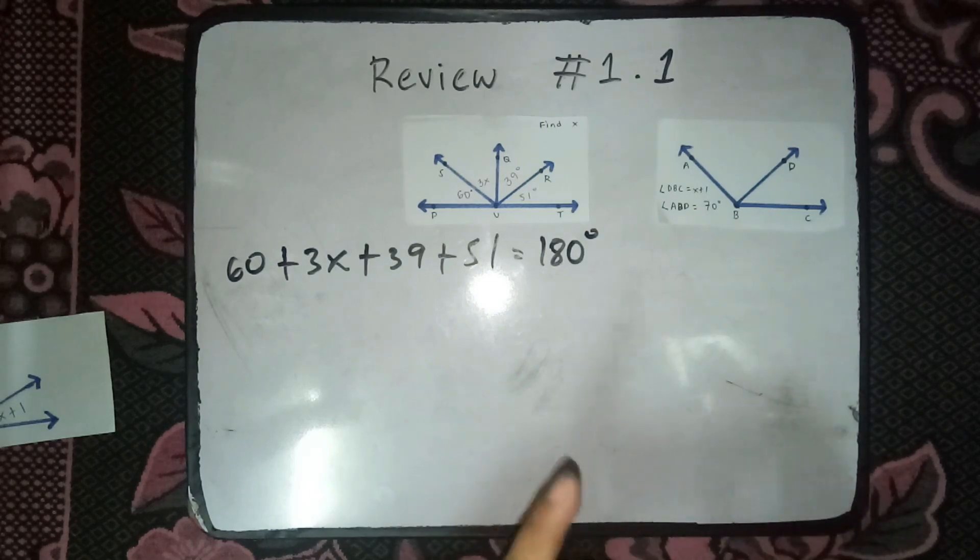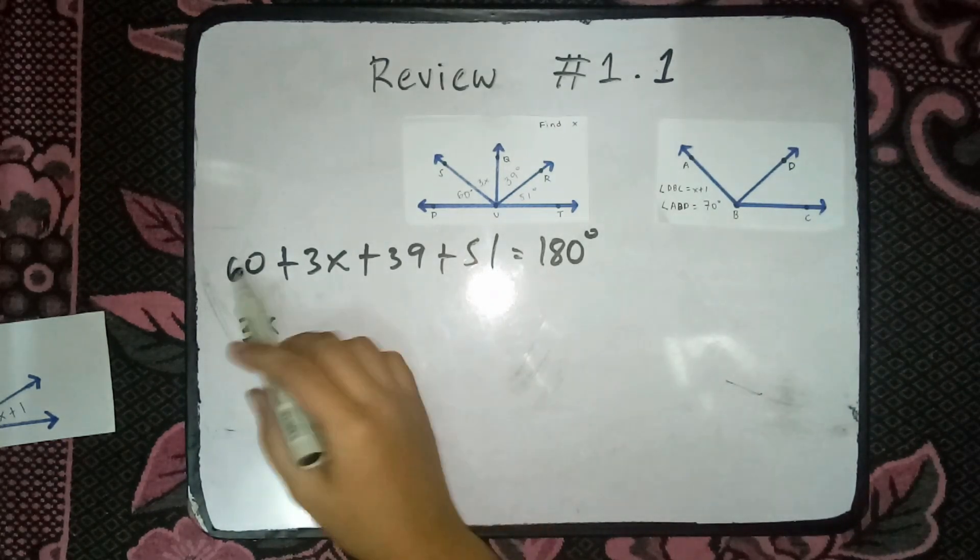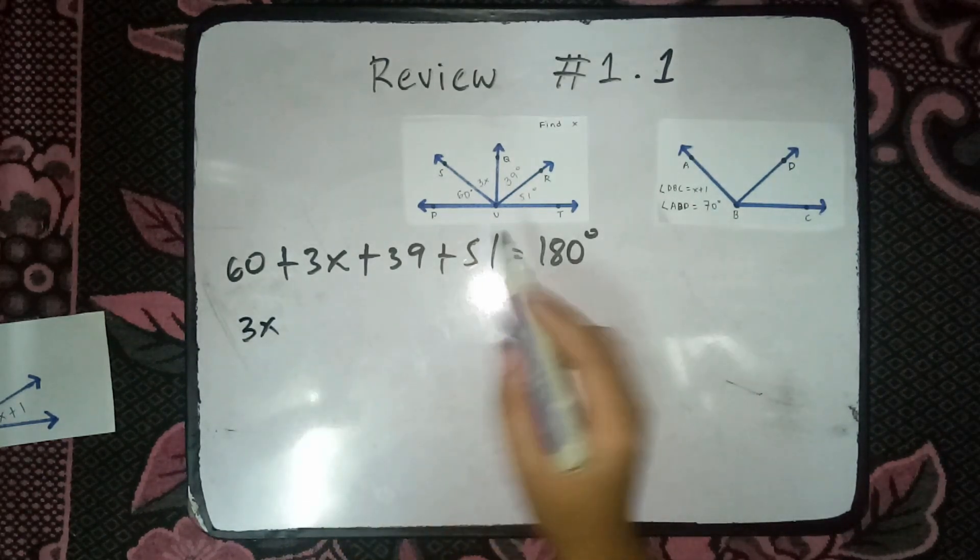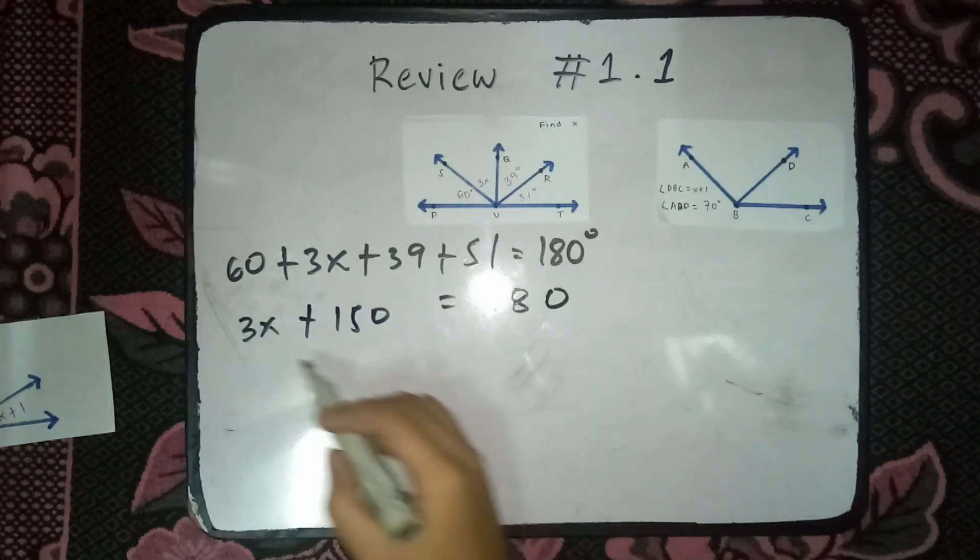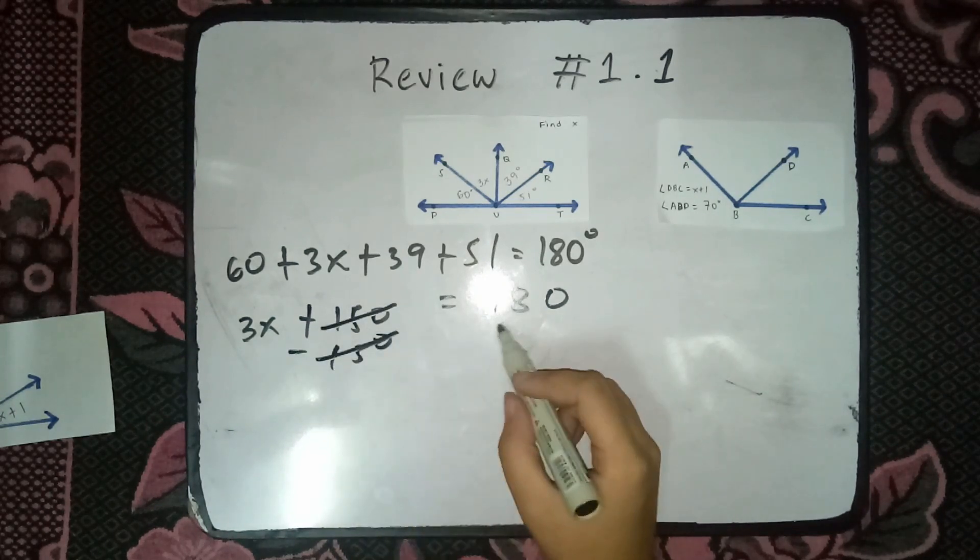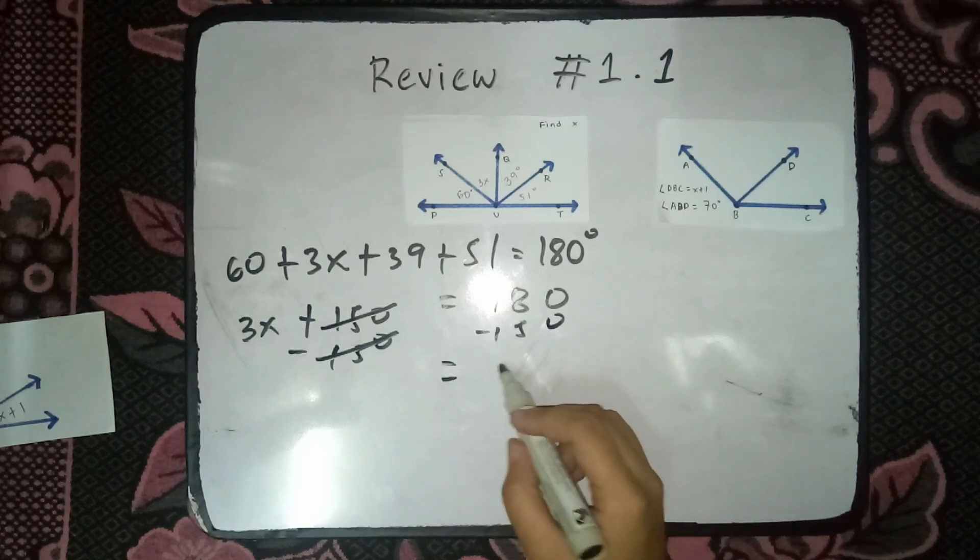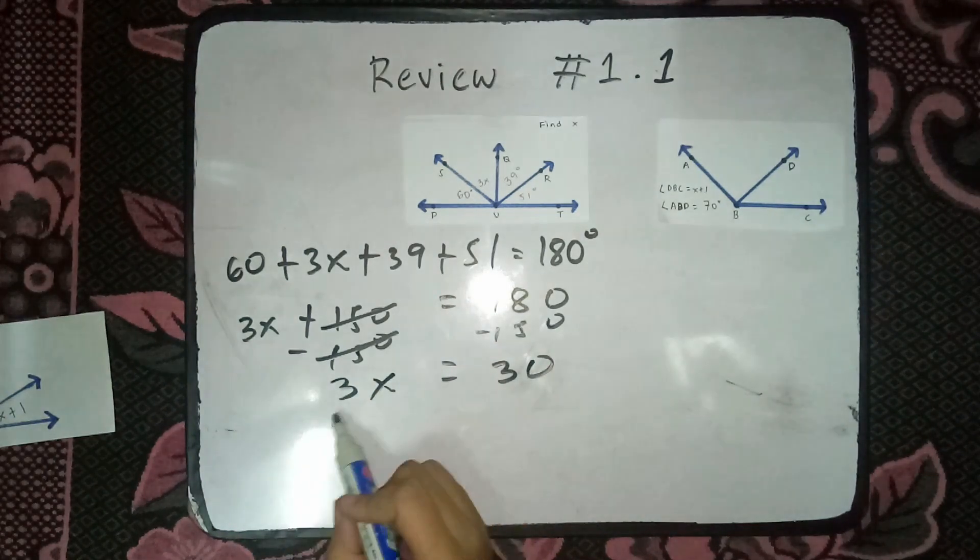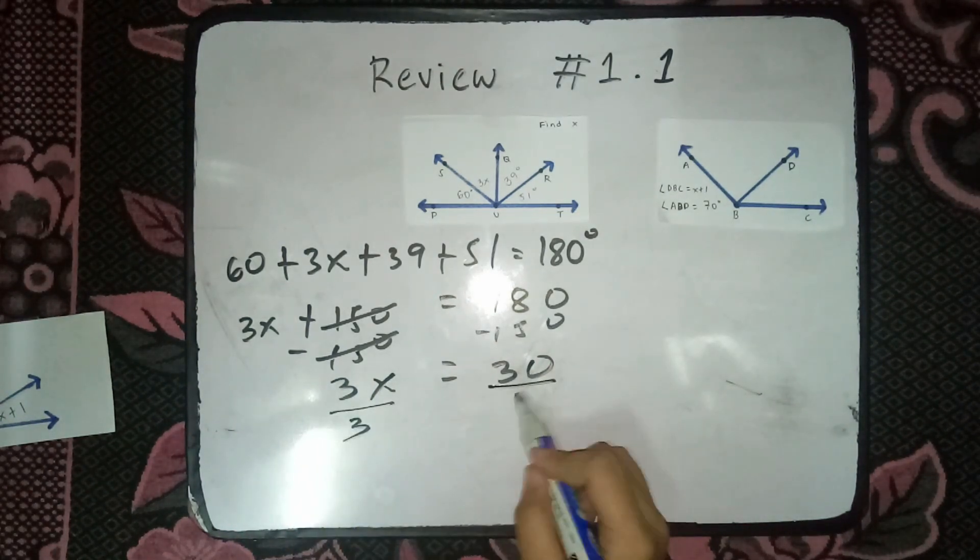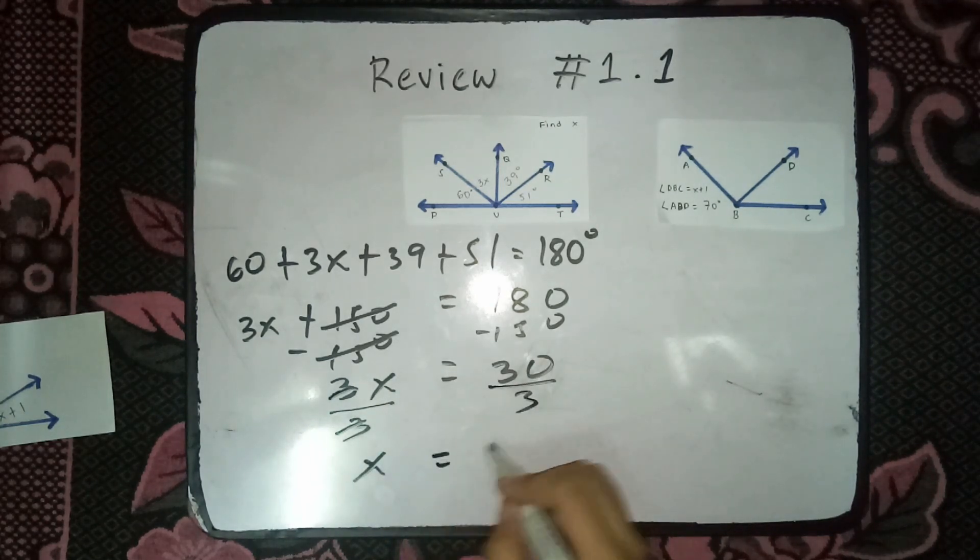Pag-class na natin yan lahat. Kapag pinag-class natin, lagyan natin ito 3x. Kapag pinag-class natin yung 60, 39 and 51, the sagot is 150. Then, bring down the 180, minus 150. Cancel natin yan. Mag-minus din tayo dito ng 150. So, this will become 30 and 3x na natitira. Ayaw natin may katabi yung x. Divide natin siya by 3. x is equals to 10.